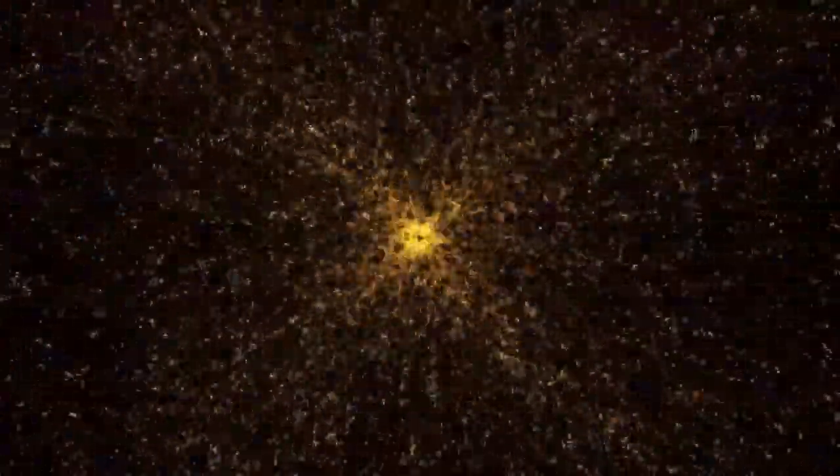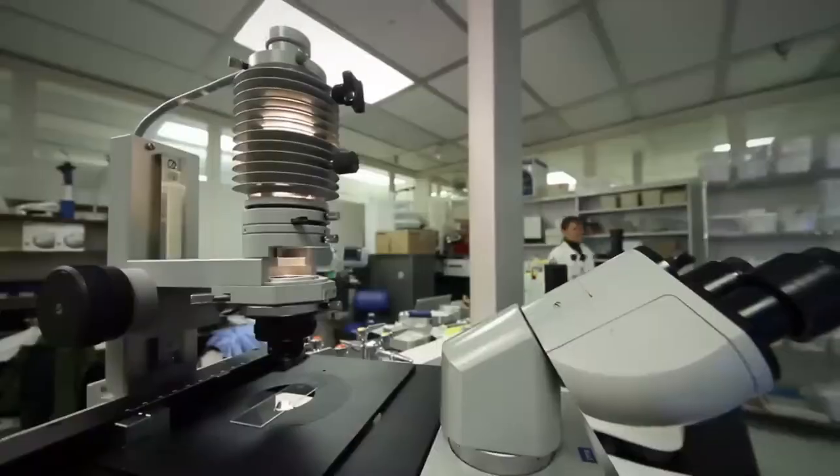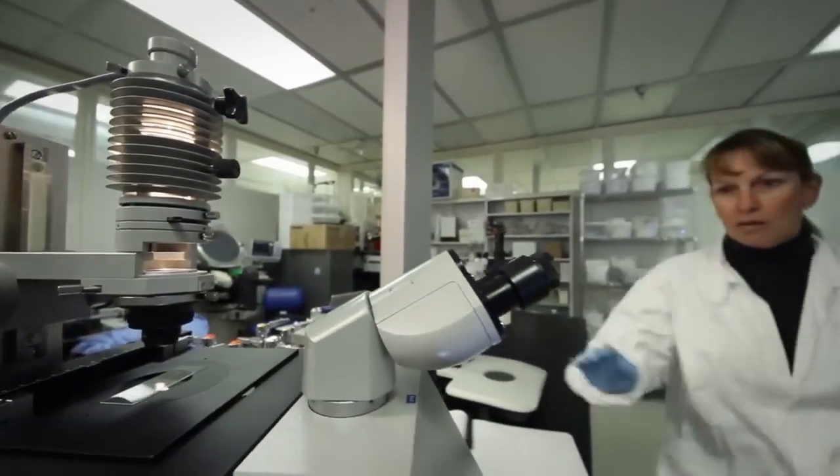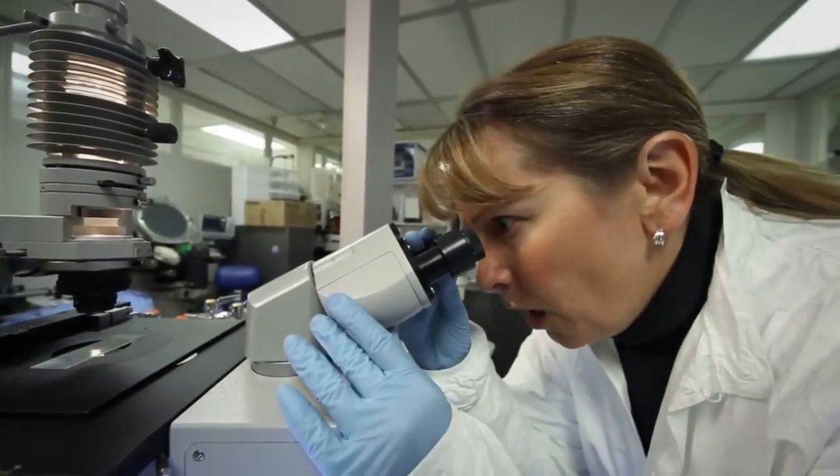Several theories have emerged to explain the cause of the dimming. One hypothesis suggests that the star is going through a phase in the supernova process, nearing the end of its life. Another theory points to the possibility of dust obscuring our view, as Betelgeuse is known to shed material that can form clouds of dust. A third explanation involves changes in the star's photosphere, possibly causing its apparent brightness to fluctuate.